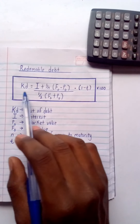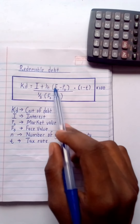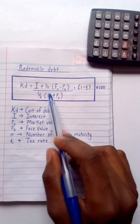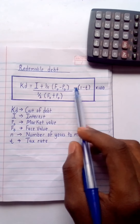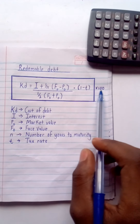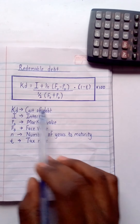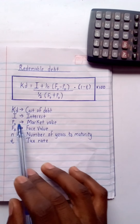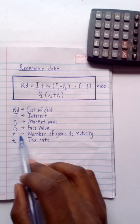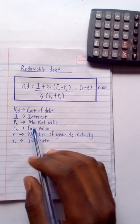For redeemable debt, the formula is: Kd = [I + (1/n)(F₀ − P₀)] ÷ [½(F₀ + P₀)] × (1 − t), then multiply by 100 because the answer is in percentage. Where: Kd is the cost of debt, I is the interest, P₀ is the market value, F₀ is the face value, n is the number of years to maturity, and t is the tax rate.